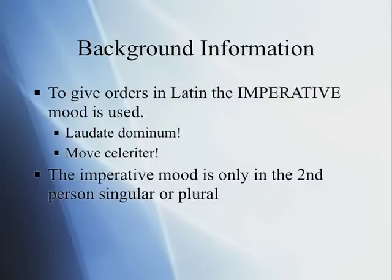'Move celeriter,' which means 'move quickly.' Here you are giving an order to one person. 'Move' — M-O-V-E — that E ending, not a T-E, is giving an order in the second person singular. That's what you can do with the imperative in Latin: give an order to the second person singular, or to a group of people in the second person plural — you, you all, you guys, you people.